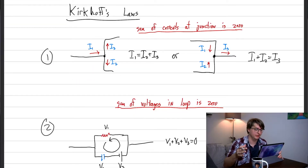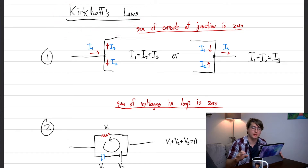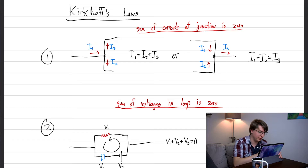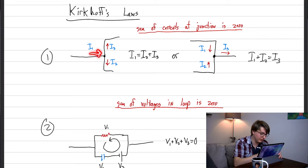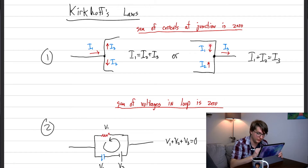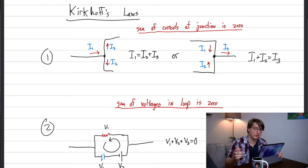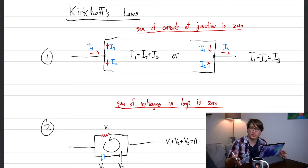Now we come to one of the biggest topics: Kirchhoff's laws, which are always true for direct current circuits. The first is the junction rule — whenever you have a junction where current splits or combines, the sum of currents at a junction is always zero. The same amount of current going in has to come out. This is simply a statement of conservation of charge.